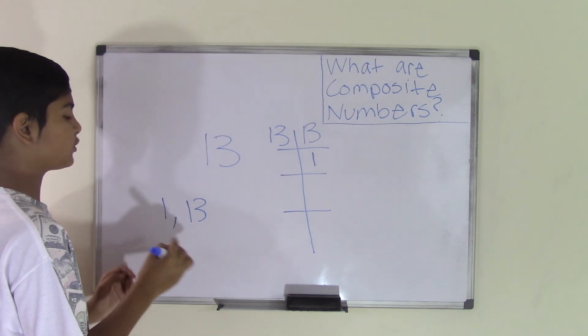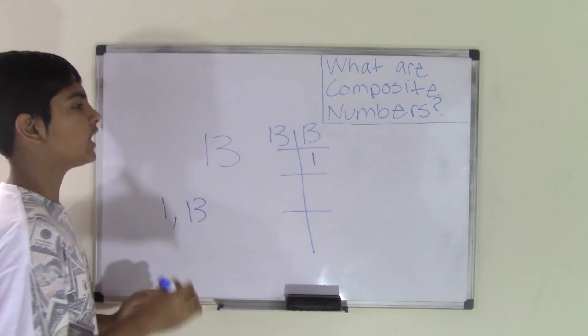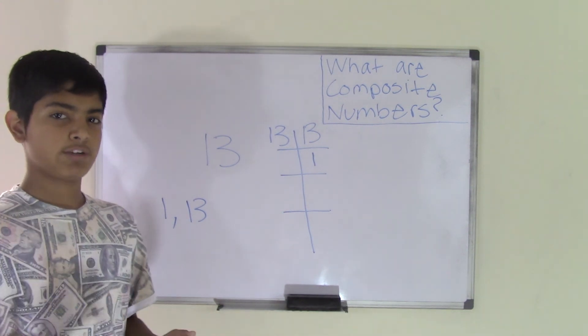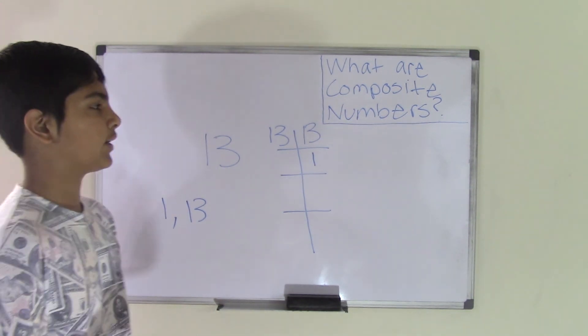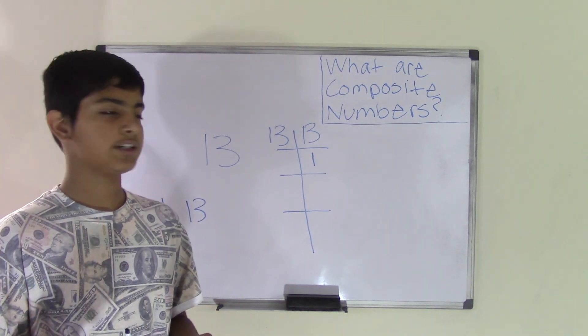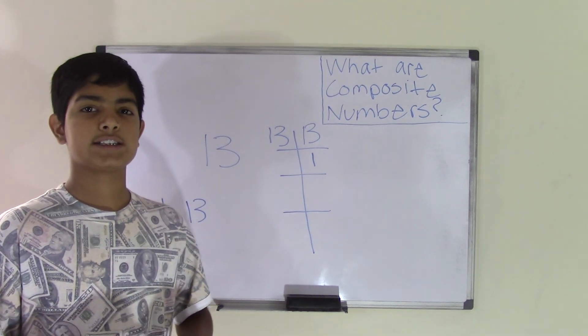Now if you look over here, we have 2 factors. So 13 is not a composite number, since a composite number has more than 2 factors. So that's that for what are composite numbers. I hope you got all the main facts I want you to know in this video, and we'll see you guys next time. Bye.